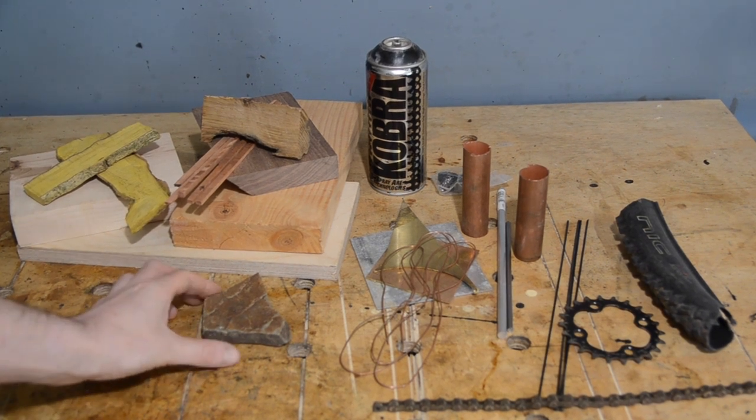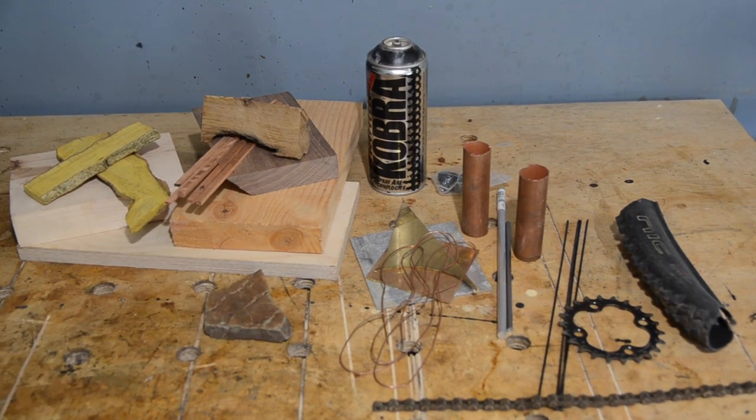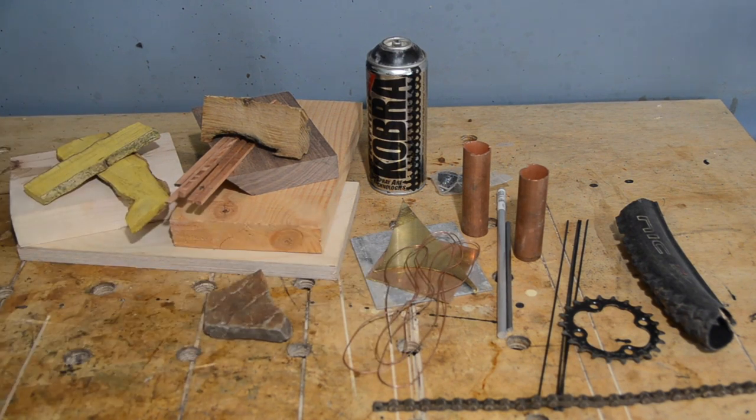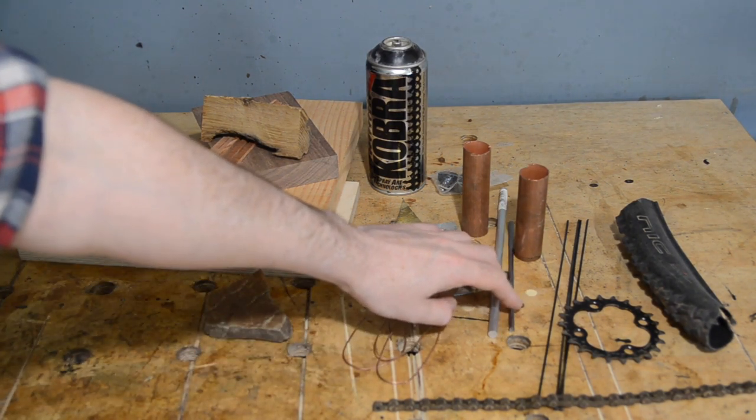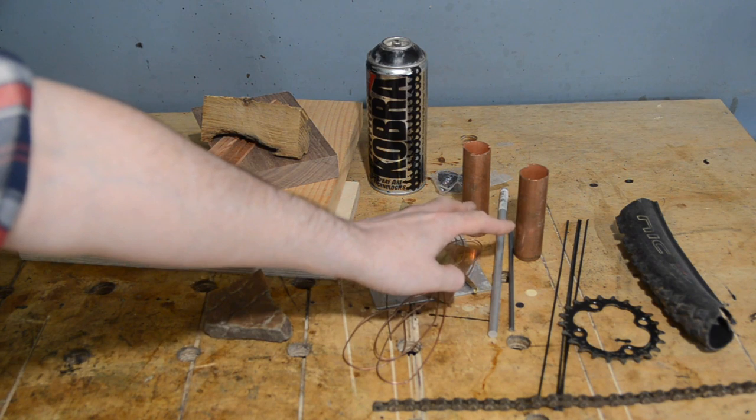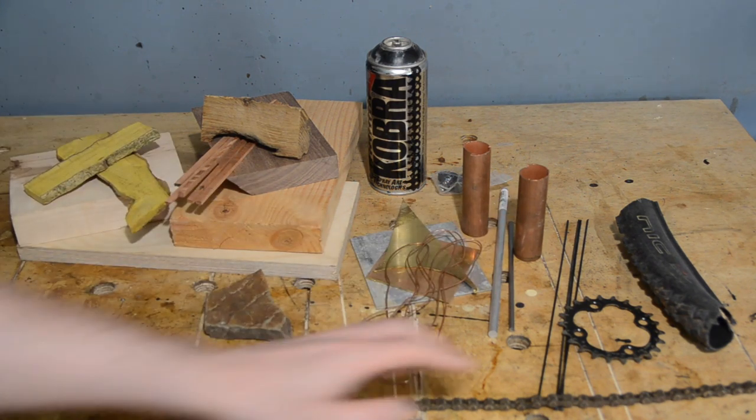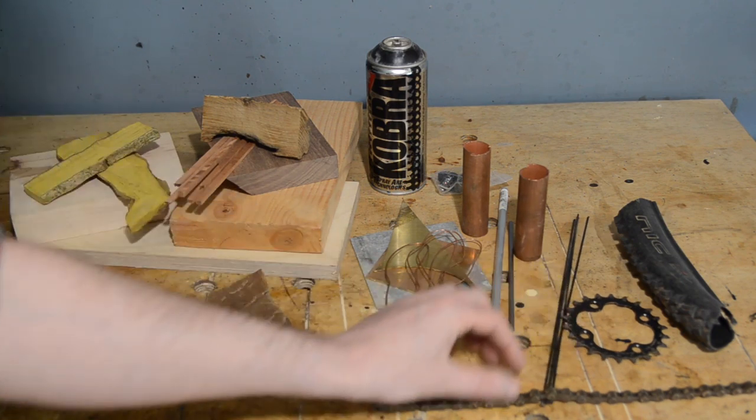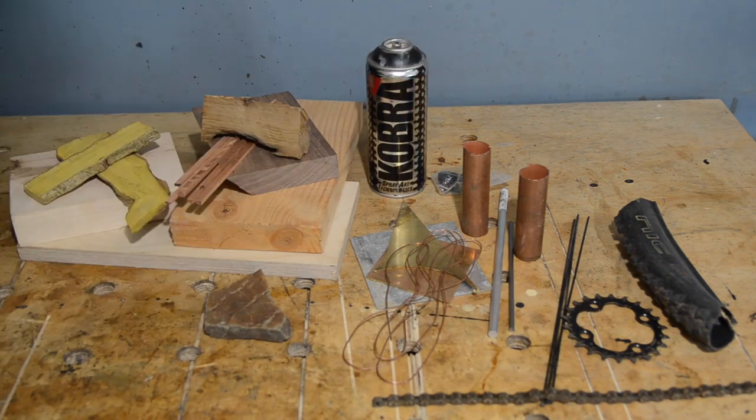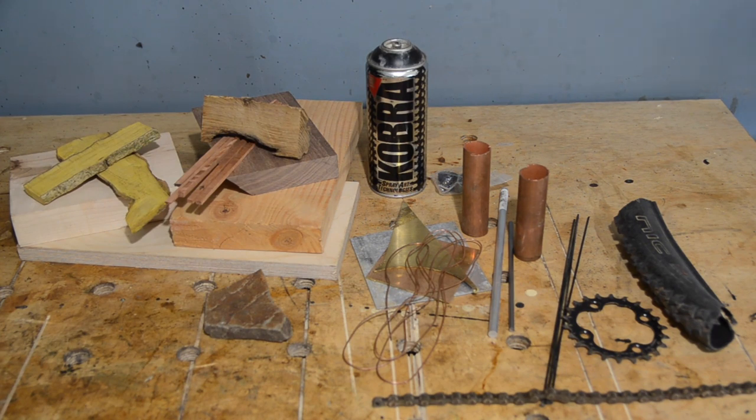We've got a bit of rock that comes from Dartmoor. We've got some metals here. So we've got some sheets of copper, aluminium and bronze. We've got some copper wire, some steel bar, some aluminium bar, copper pipe. Then we've got some bits from mountain bikes. We've got some tyre, a gear, some spokes, a chain and we've got a can of black spray paint.